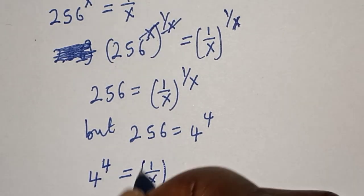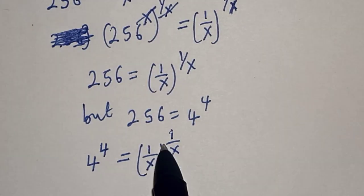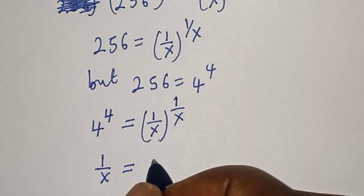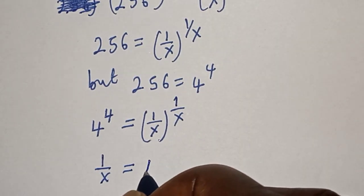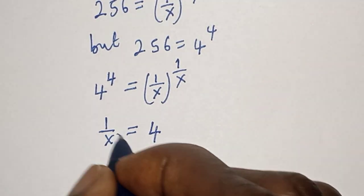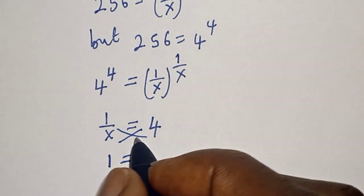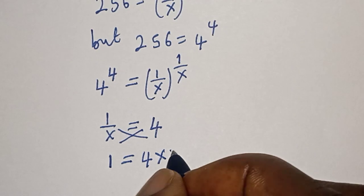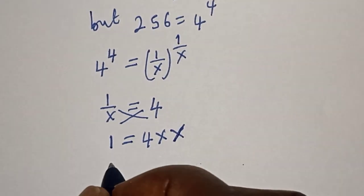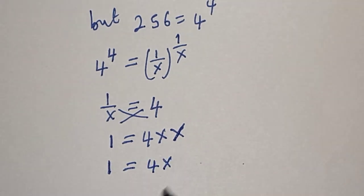And if you compare this, 1 over x is equal to 4. Now let's cross multiply: we have 1 is equal to 4 times x, then 1 is equal to 4x.